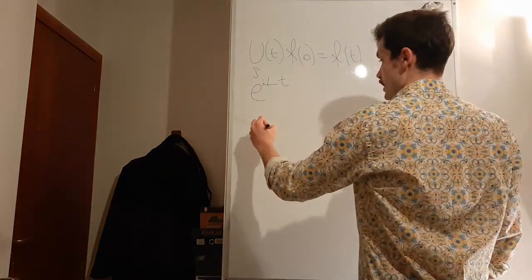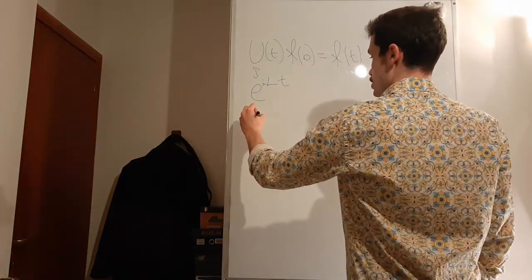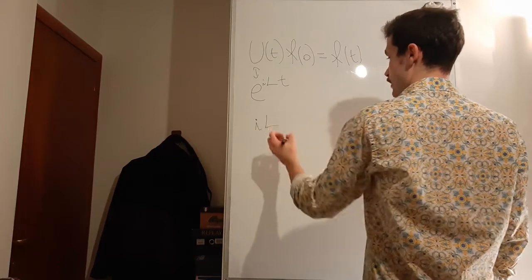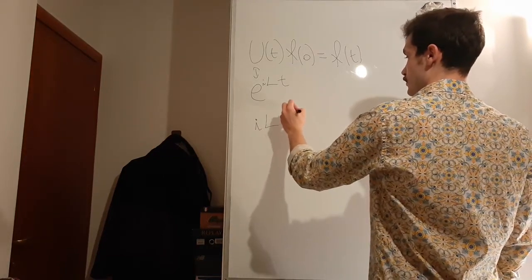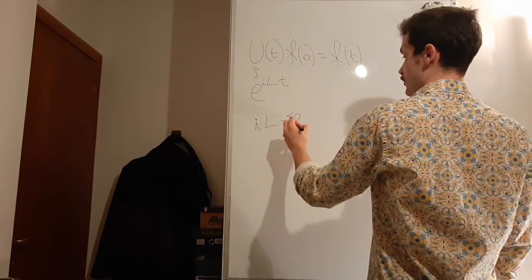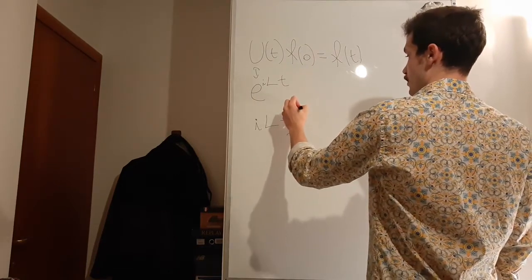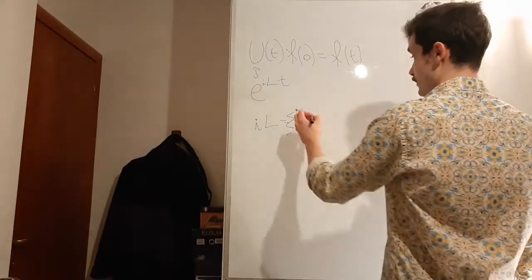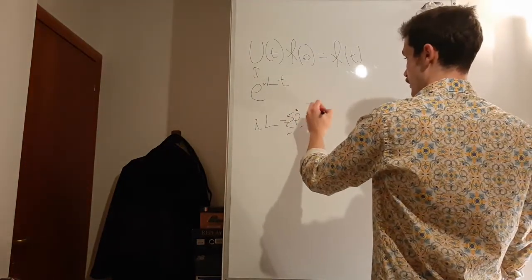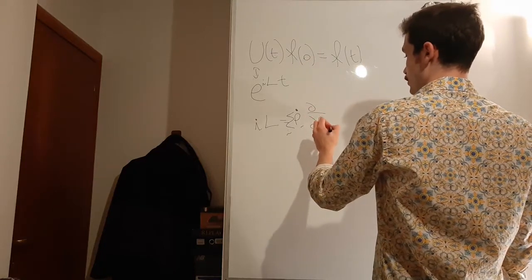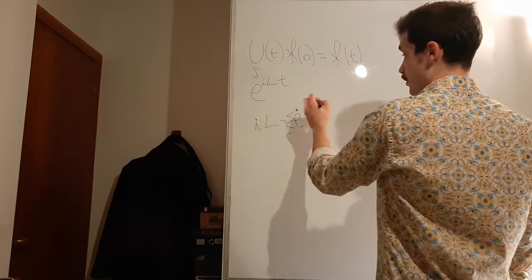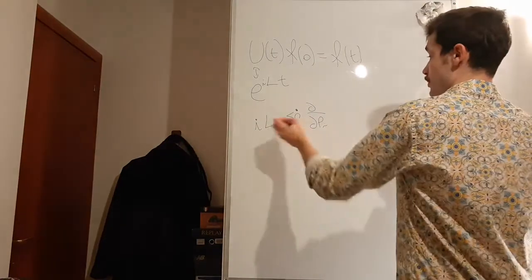The imaginary unit L is equal to the sum over all the degrees of freedom of the momenta, and the derivative according to the momenta of whatever we are applying the operator to.